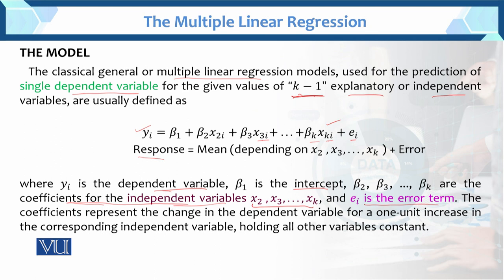The coefficients represent the change in the dependent variable for a one-unit increase in the corresponding independent variable, holding all other variables constant. This is very important. For example, if x2 increases by one unit, then the model predicts β1 + β2 change in y, while holding the rest of the variables constant. So a one-unit increase in x2 will produce a corresponding prediction for the dependent variable y.